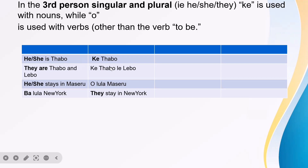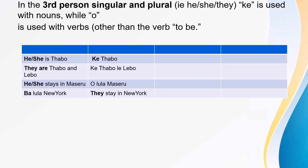Whenever you're referring to someone else other than you, the tone for "ki" is always going to be higher. But if you're referring to yourself like I, it is going to be "ki" with a low tone. So, he or she stays in Maseru — "Udula Maseru." They stay in New York — "Ba dula New York."